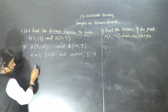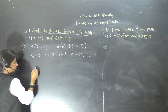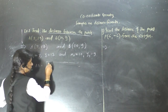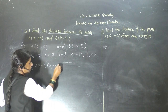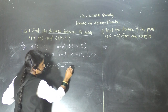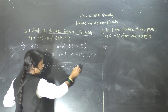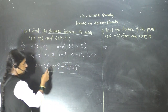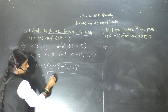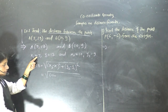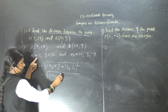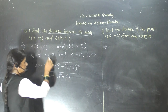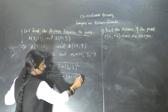Now applying the distance formula: AB = √((x2 - x1)² + (y2 - y1)²). Putting in values: AB = √((10 - 7)² + (9 - 13)²). That gives us √(3² + (-4)²).